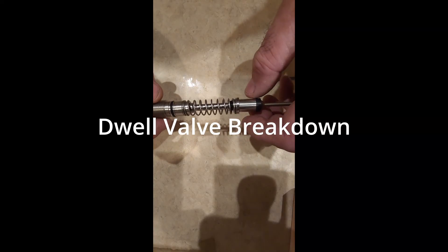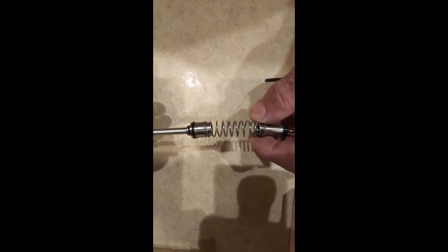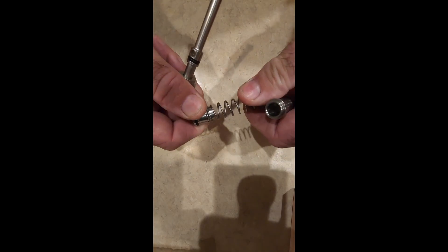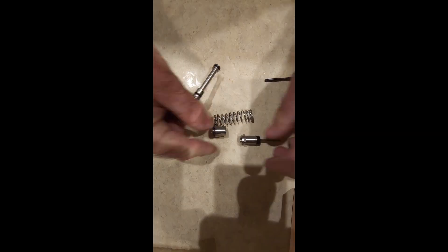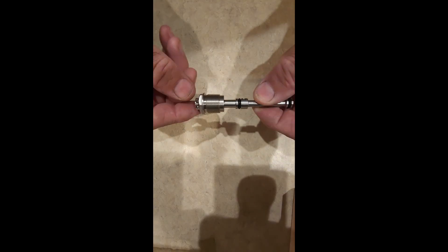Okay, here's a quick breakdown of the dwell valve. Dwell valve will come apart as such. Spring comes off of that. Spring pops off of that. Those three components, I don't need those right now because the parts I want to show you are all within this.